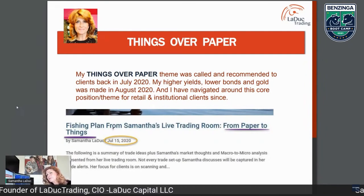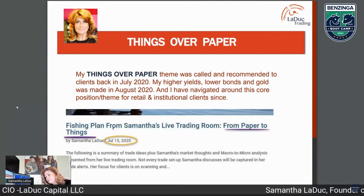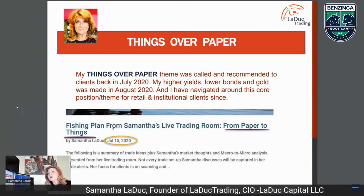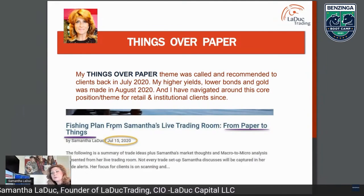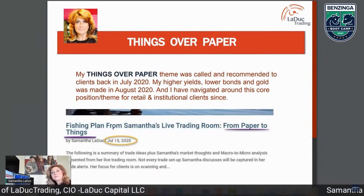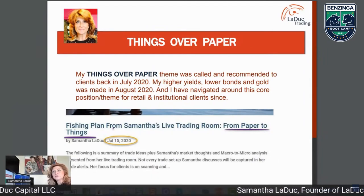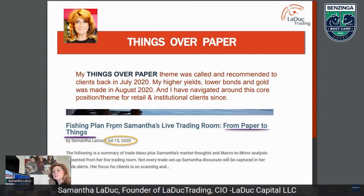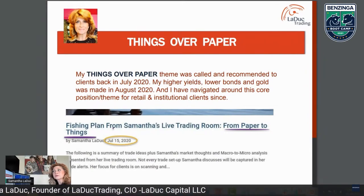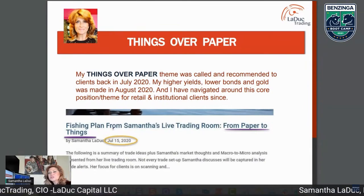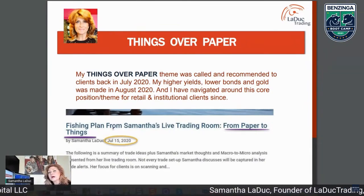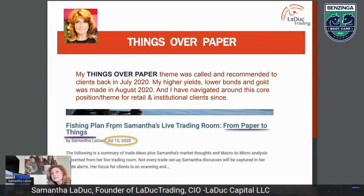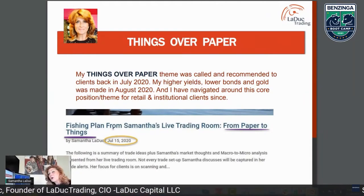One theme I was very convicted about was 'things over paper.' We've been in a multi-decade commodities lull — no love for commodities, they didn't produce anywhere near the alpha that FAANG stocks did. I had a strong theme that we were going to have a paper-to-things rotation, meaning commodities would now become more valuable. Last summer I coined the phrase 'inflation is sticky, things over paper,' and now economists are coming out saying we have a lot of inflation.